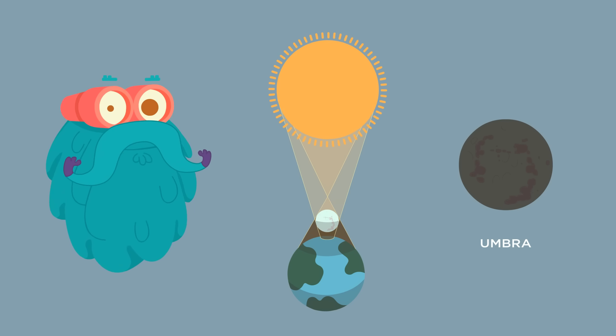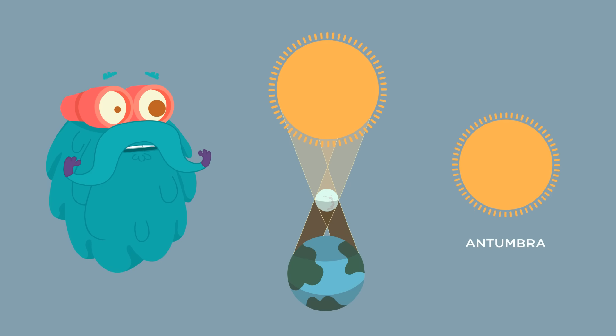Antumbra is the area beyond the Umbra. Here the Moon is completely in front of the Sun but doesn't cover the entire Sun. The outline of the Sun can be seen around the shadow of the Moon, and that is when you see the annular solar eclipse.